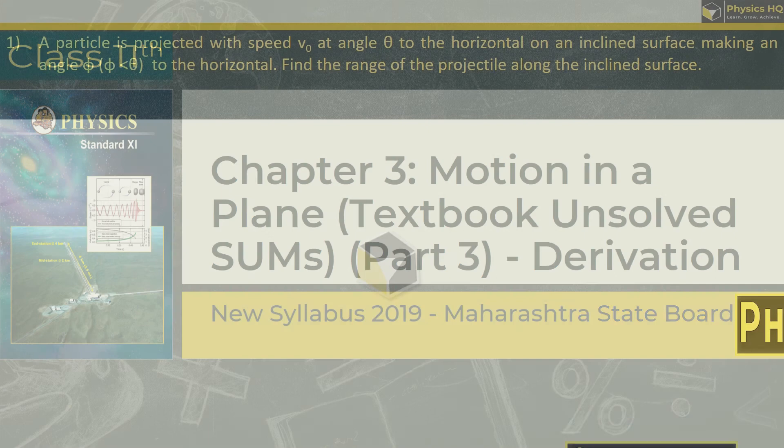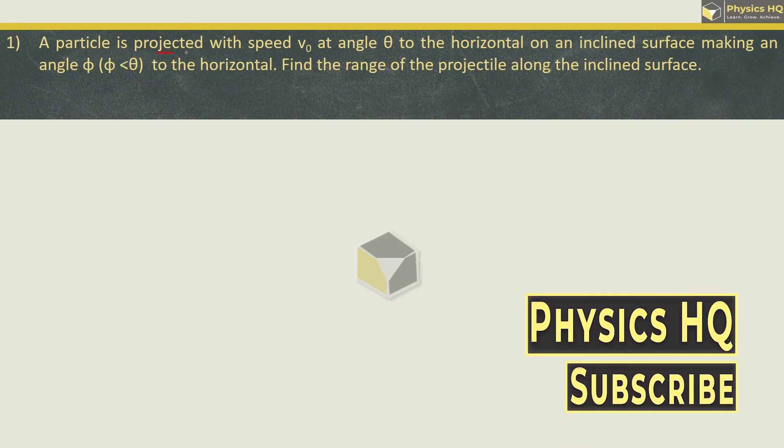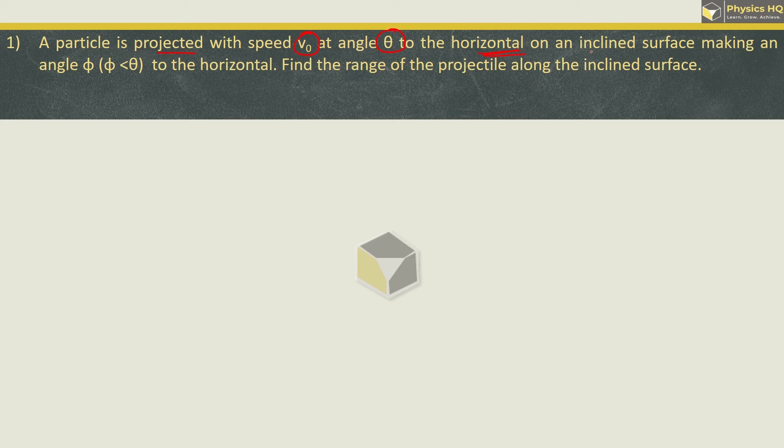So let us cover it. A particle is projected with speed v0 at angle theta to the horizontal on an inclined surface making an angle phi, where phi is less than theta to the horizontal. Find the range of the projectile along the inclined surface.